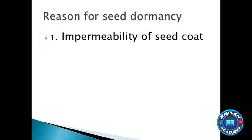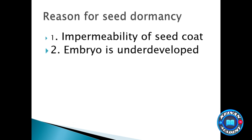The next cause is the embryo. The embryo of a seed consists of the radicle and the plumule. If the embryo is underdeveloped, the seed will be in a dormant state. An embryo may be underdeveloped if it has not had enough time to develop properly, which can be a factor caused by time or by hormones — which we will cover in coming lectures.